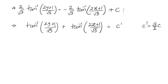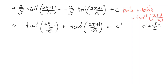Now we use the formula tan⁻¹(x) + tan⁻¹(y) = tan⁻¹((x + y)/(1 − xy)). Here x is (2y + 1)/√3 and y is (2x + 1)/√3. We apply this formula and try to shift tan to the right hand side through simplification.